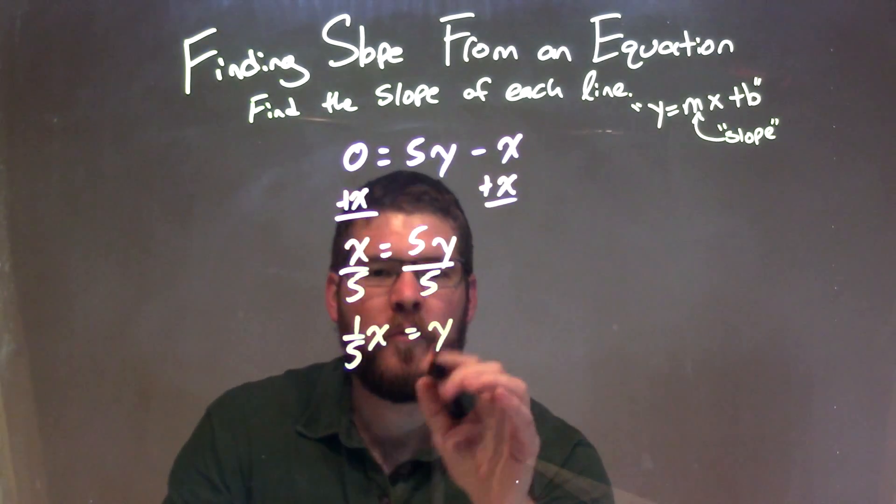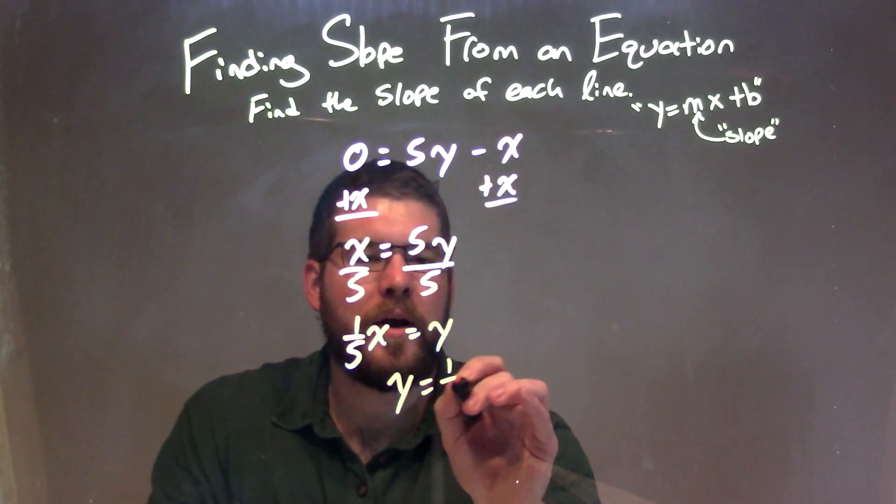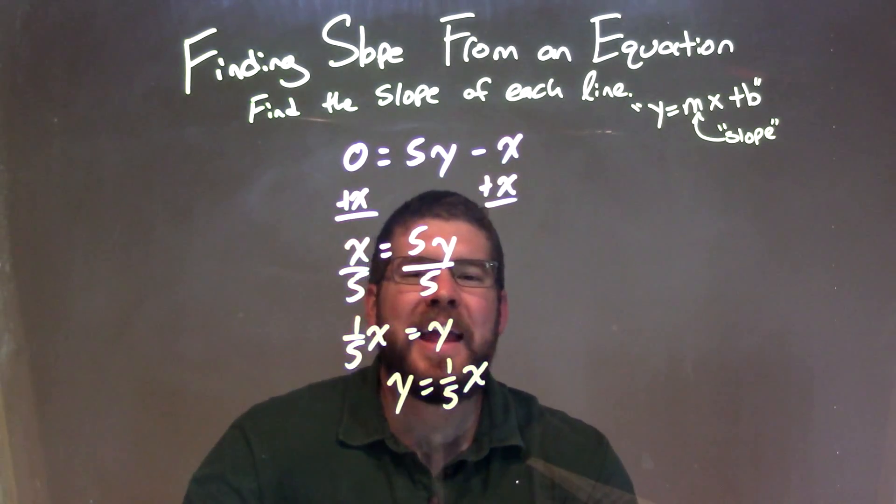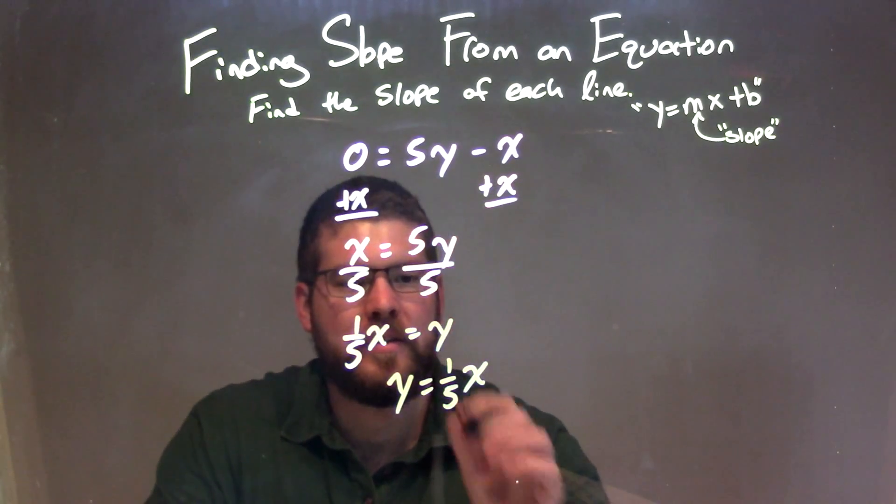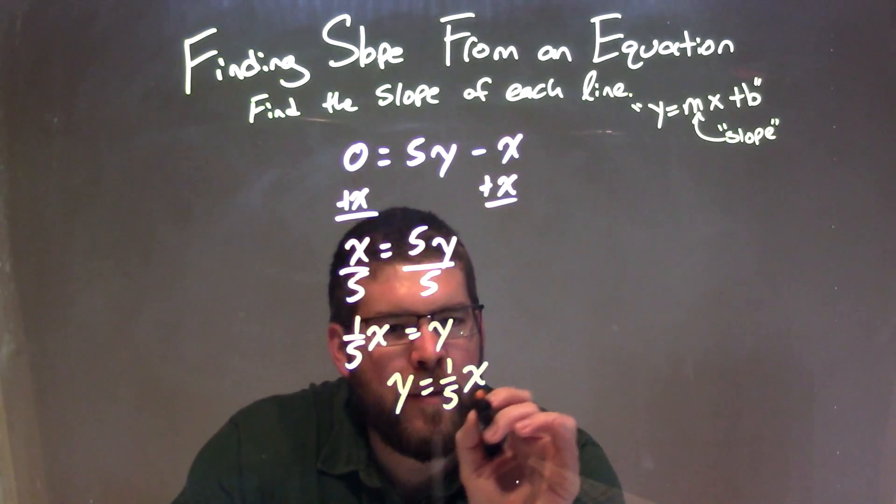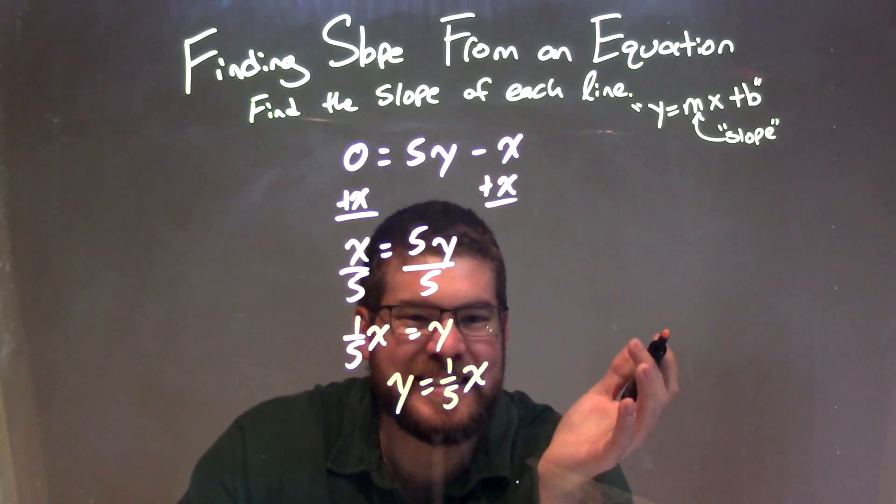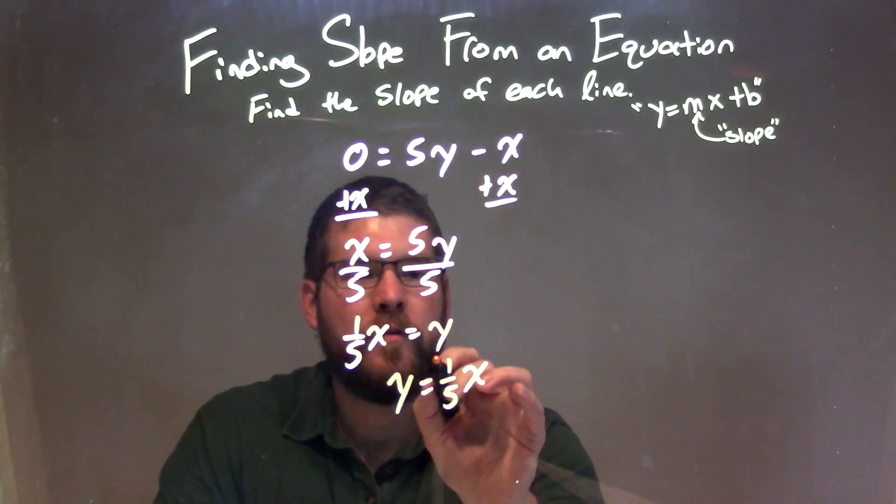Let's rearrange this to have y first, so y equals 1/5 x. That is actually in our slope intercept form, y equals mx plus b, with b being 0. So our m value is 1/5.